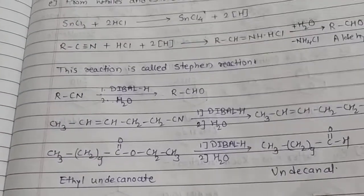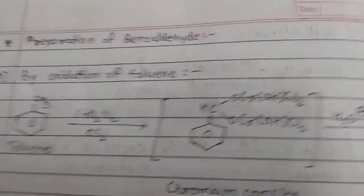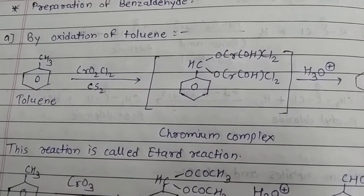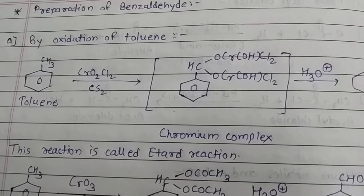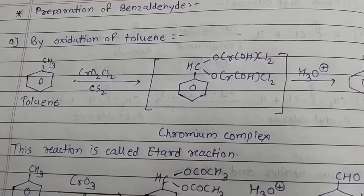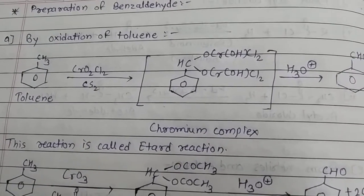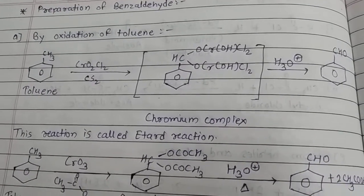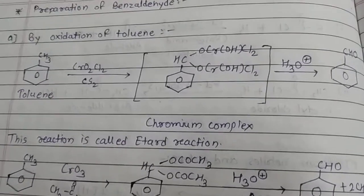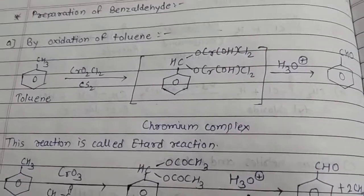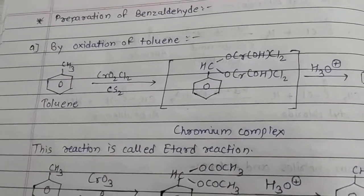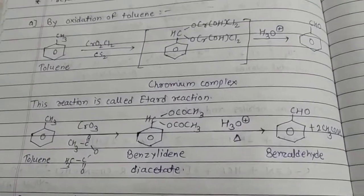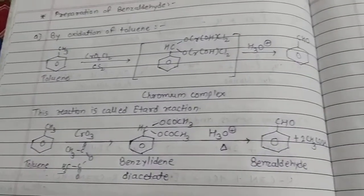Now let's see preparation of benzaldehyde, that is aromatic aldehyde. First is by oxidation of toluene. Toluene has CH3 on the benzene ring. By oxidizing toluene in presence of CrO2Cl2 and carbon disulfide, we get a chromium complex OCrOHCl2. After treating that with hydronium ion, we get benzaldehyde. In short, CH3 gets converted into CHO by oxidation of toluene. The reagent used is CrO2Cl2. This reaction is known as Etard reaction for preparation of benzaldehyde.